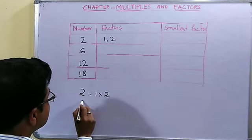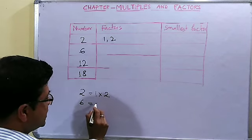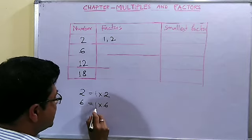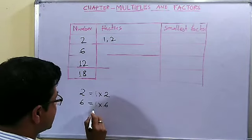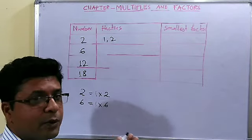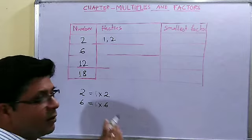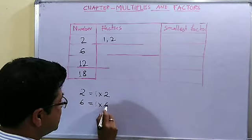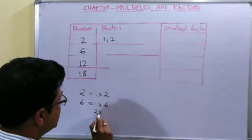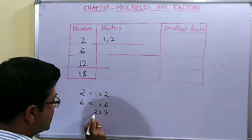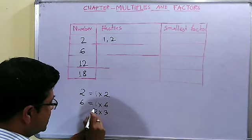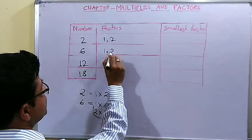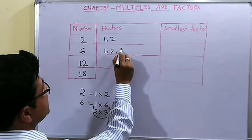Next if we come to 6. We start with 1 into 6. Then we try 2: 2 into 3 equals 6. Next number is 3 but 3 is already covered. You have to know the multiplication table very well — only then this multiples and factors chapter will be easy for you. So the factors of 6 are 1, 2, 3 and 6.